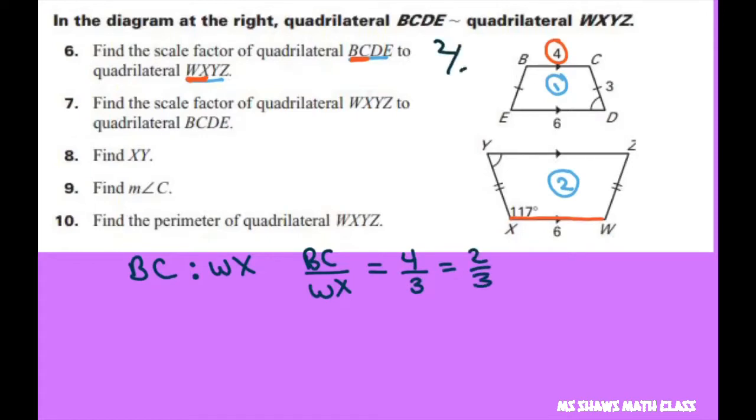Now if you go the other way from WXYZ to BCDE, that's just going to be WX divided by BC, which equals 3 to 4 or 3/2. Now we have to find XY.